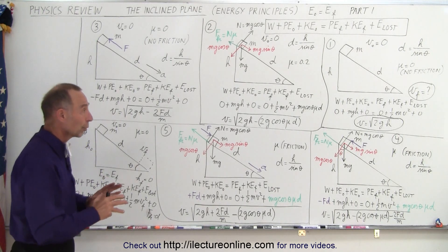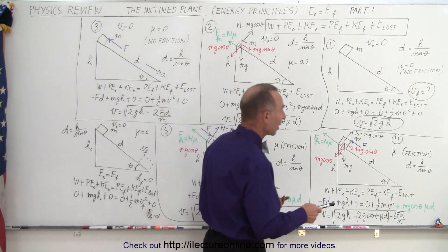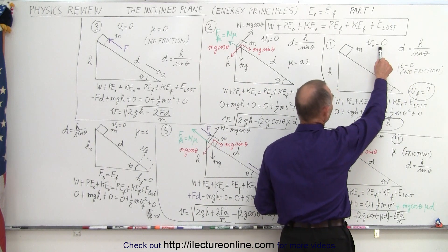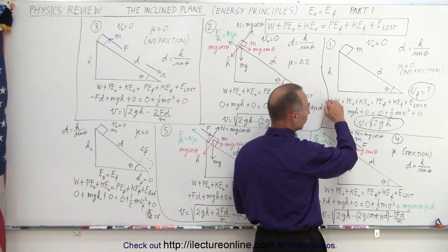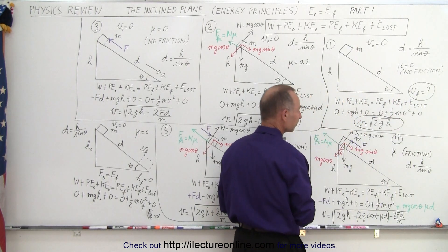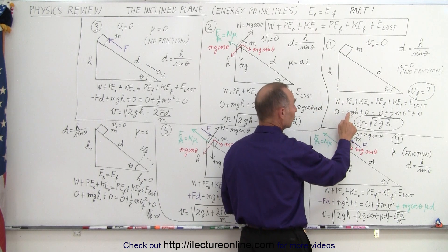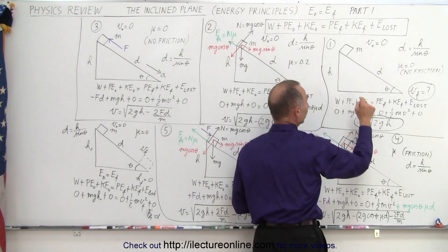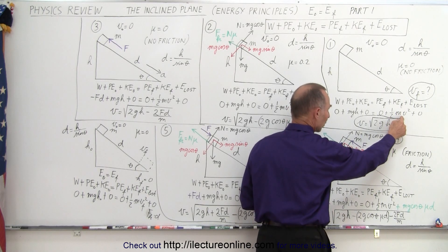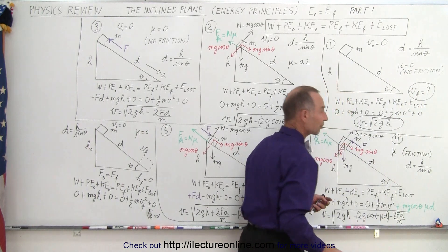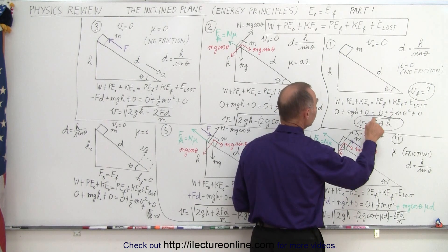We have five examples on the board and we'll quickly go over each one, building on the previous knowledge. The first example has no friction, initial velocity at start is zero, the object begins to slide down the incline, and we want to know the final velocity. Using our energy conservation equation: no work put into the system, initial potential energy is mgh, no initial kinetic energy. Final potential energy is zero at the bottom, final kinetic energy is one-half mv squared, and no energy loss because there's no friction. Solving for v gives us a final velocity equal to the square root of 2gh.